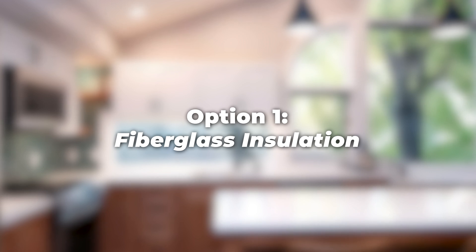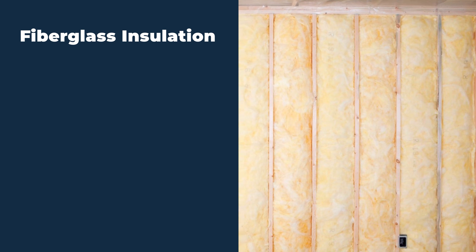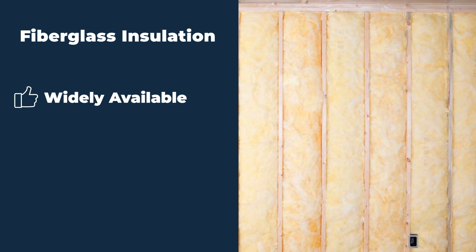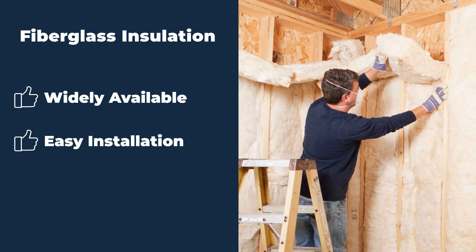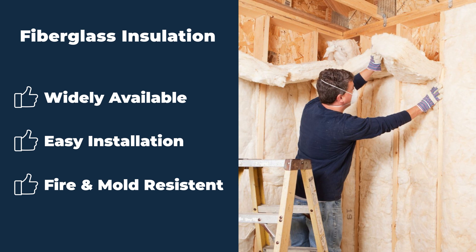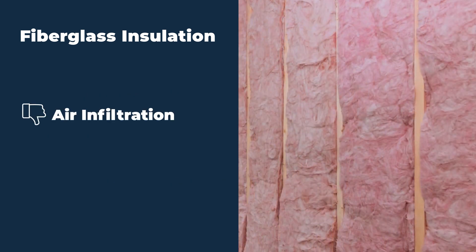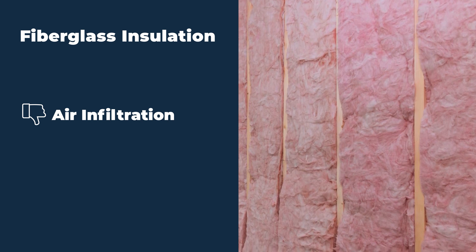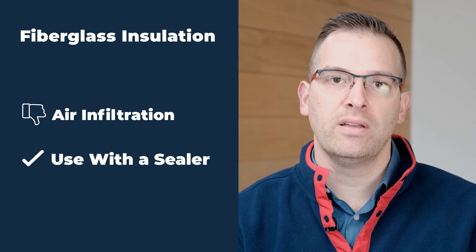One of the first types of insulation you're likely to come across is fiberglass. It's widely available and an affordable option. You can generally find it just about anywhere, typical installation is pretty easy and straightforward, most people can do it themselves, and it has a natural resistance to fire and mold. Some of the downsides to fiberglass are air infiltration — it doesn't do a good job of stopping or mitigating airflow, so you need to consider another solution to partner with the fiberglass to make that cavity more airtight.